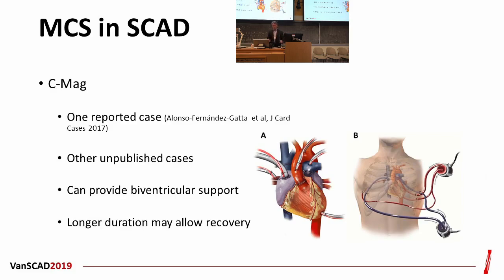Another device we use is CentriMag, which is a true assist device — truly an artificial heart. It can be used on both the right and left sides and provides continuous full support. This is a surgical device that can be used in the cath lab setting. At our center, we can get this implanted in less than 20 to 30 minutes in the OR. It's a very good device that allows patients to remain on support for longer durations — sometimes months — even allowing patients to do physiotherapy, and it can be used as a bridge to another device or bridge to recovery.